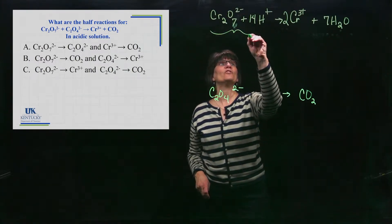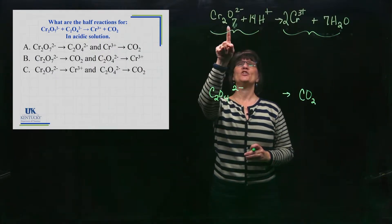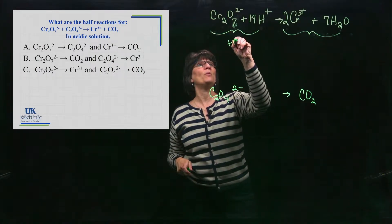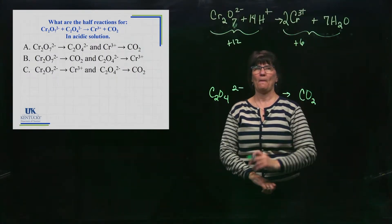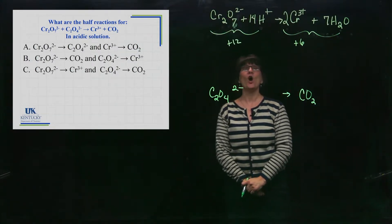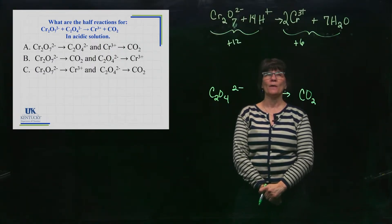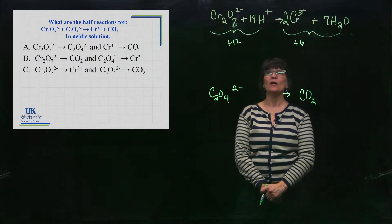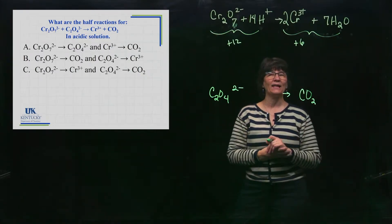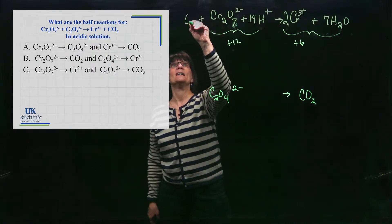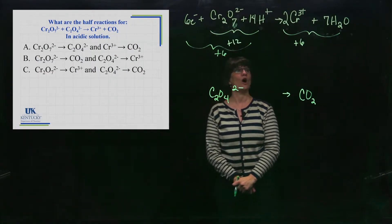Now we're ready to balance the charge. I look at the total charge on both sides. On the left I have fourteen positives and two negatives — a net of twelve positives. On the right I have two times three, which is six positives. They're definitely not balanced. The only way to balance charges is by adding electrons. I add six electrons to the left side, bringing it down to plus six to match the right side.